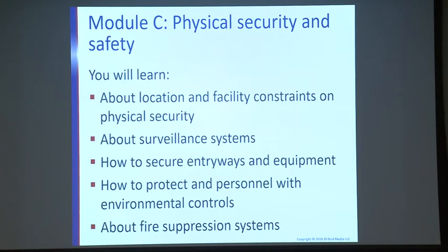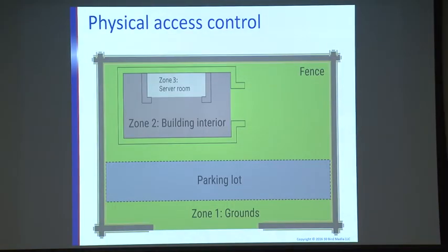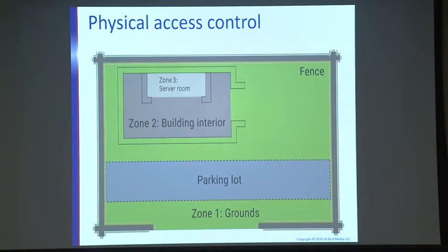This next module covers physical security and safety — location and facility constraints, surveillance systems, how to secure entranceways and equipment, protecting equipment and personnel through environmental controls, and fire suppression systems. Looking at physical access: you'll have a fence around the facility, a gate up front, hopefully a guard. Coming into the parking lot, you walk into the building through zone two — the building interior — requiring a swipe card or PIN. The server room similarly requires a card and PIN. The more physical access controls in place, the better.